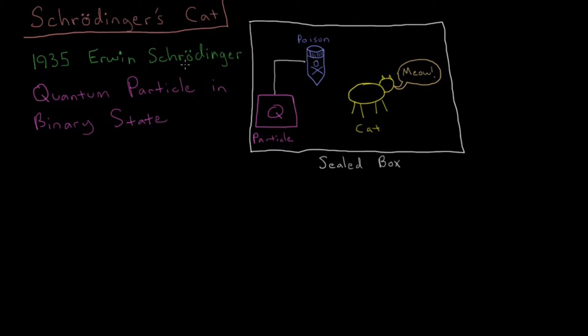So in this experiment, what we've got is some quantum particle, and it can be either in two states. It can be either decayed or not decayed. So either yes or no, one or zero, true or false. The point is there's just two possible states that this particle can be in.